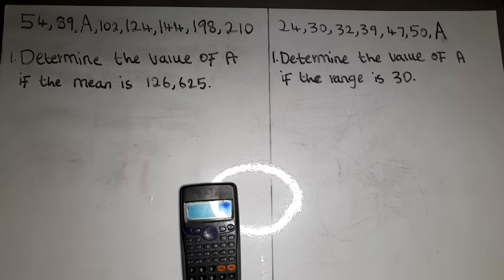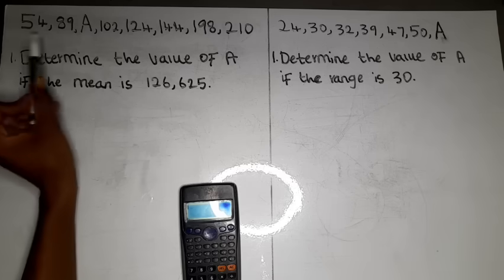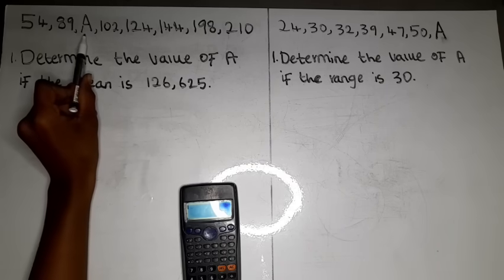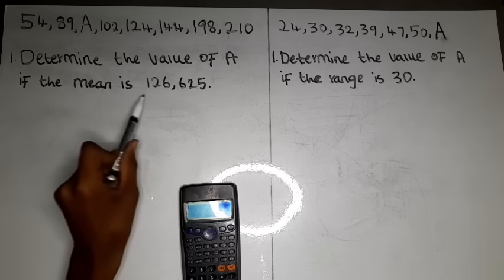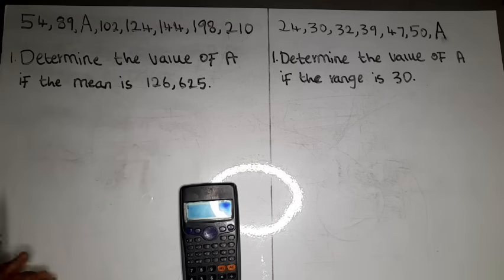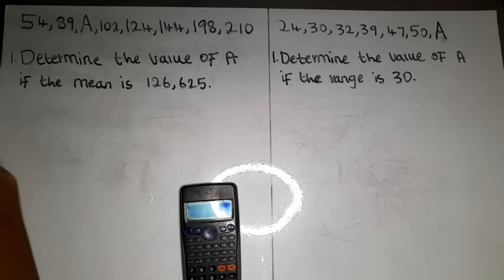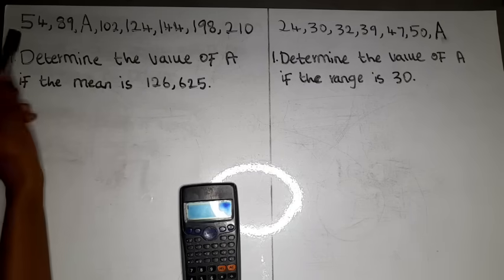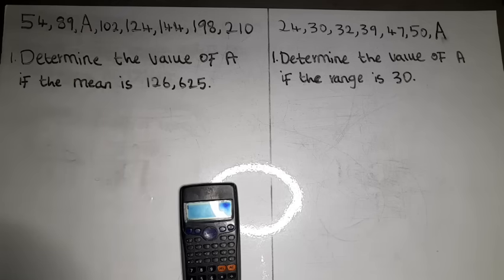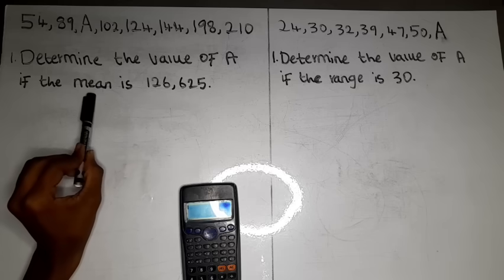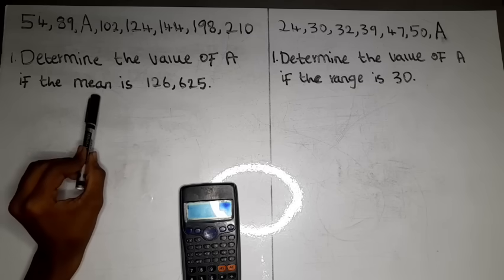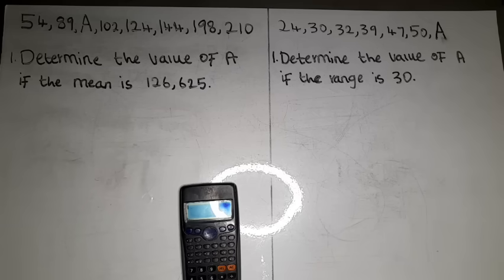As you can see, we have been given a number sequence — which is normal in data handling — and it has a missing value. Where there is a missing value, they have substituted the number with the letter 'a'. The question says: determine the value of 'a' if the mean is 126.625. So in this case, we are not calculating the mean; we have been given the mean and we have to find the value of 'a' using it.